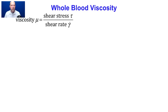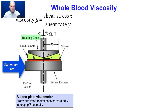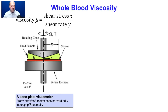The viscosity of a fluid mu is the shear stress tau divided by the shear rate gamma-dot. Viscosity is measured with a device called a viscometer. A popular kind is the cone-plate viscometer, where the fluid sample sits on a plate underneath a cone that spins. The spinning causes the fluid to shear, and the shear stresses are transmitted from the cone to the plate, causing a torque to be measured at the stationary plate. From the torque the stress can be computed, and from the speed of the cone the shear rate can be computed, giving the viscosity.